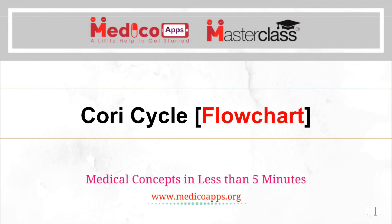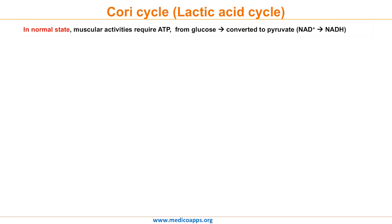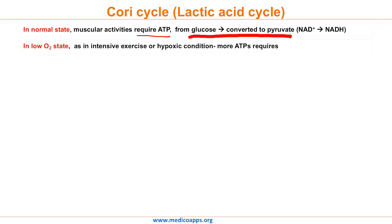In today's MedecoApps Masterclass, we will study about Cori Cycle. As we know, muscular activities require ATP as an energy source, which is provided by glucose when oxygen levels are normal. In the glycolysis cycle, glucose is converted into pyruvate to produce ATP, with NAD+ being converted to NADH. But if oxygen levels are low or no oxygen is present — as in intense exercise or hypoxic conditions — another mechanism called the Cori Cycle takes place.